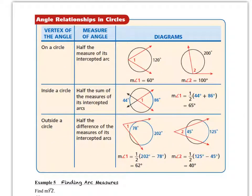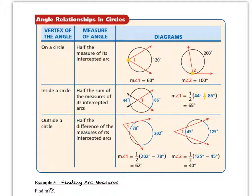Here is a summary of all the theorems we just saw. When the vertex is directly on the circle, the measure of the angle is one-half the measure of the intercepted arc. When two chords or secants intersect inside the circle, the measure of the angle is half the sum of the intercepted arcs — add them together and divide by two. When the vertex is exterior to the circle, find the difference of the intercepted arcs and divide by two.